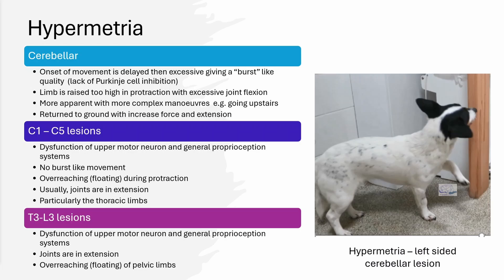Movement is coordinated by the cerebellum, which also initiates movement, decides on the range and force, and then controls and refines it. With a hypermetric movement in cerebellar disease, the onset of movement is delayed and then excessive — a burst of activity — due to lack of Purkinje cell inhibition.